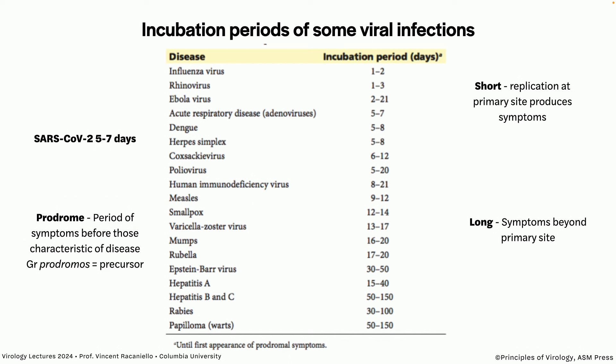Viruses like measles have an incubation period of nine to 12 days — the symptoms being the rash. A student asked how the eclipse and latent period relate to the incubation period. They don't, except in terms of the length of the reproduction period. A virus that takes three or four days to go through a cycle could have a longer incubation period, but eclipse and latent periods don't directly determine it.